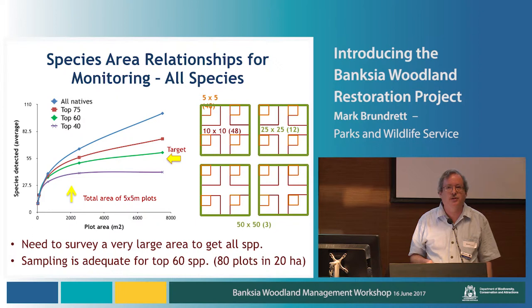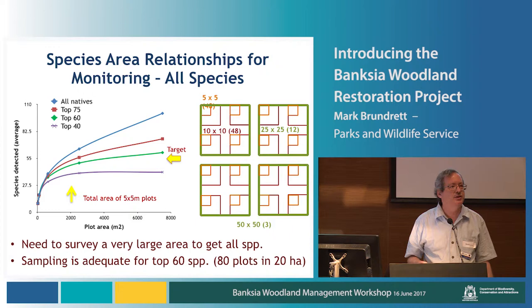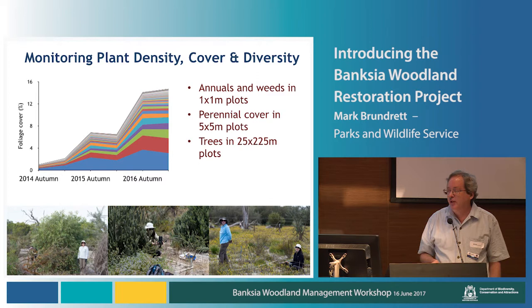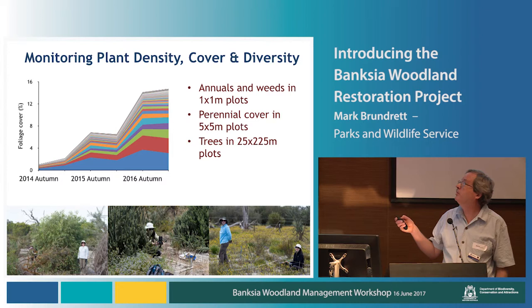We needed to work out if our plot numbers in rehabilitation were actually effective, so we did a small species-area relationship experiment. If we have 80 plots, is that enough to measure whether plant diversity is returning properly? We found it will effectively measure the 60 most common species, but if you want to measure all native plants across the entire site, the number of plots needed increases to cover the entire site — so you have to be realistic about monitoring. A key result is that all our areas, both undisturbed and revegetated, are dominated by a relatively small number of common species, but there's also a huge number of relatively less dominant species that might become more important later on.